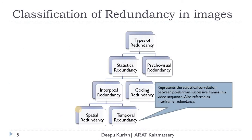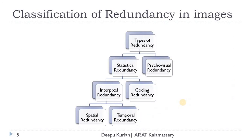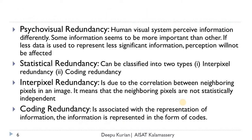Temporal redundancy exists in the time domain. In a video, frames are not purely statistically independent — in most cases, adjacent frames will be correlated. By employing this correlation between adjacent frames, we can achieve compression. This type of redundancy is called temporal redundancy, also referred to as interframe redundancy. This is the broad classification of redundancy in images, represented here in the diagram.